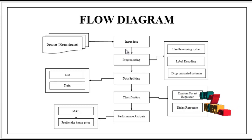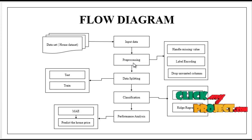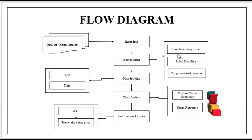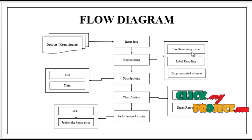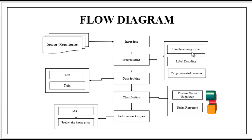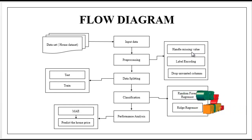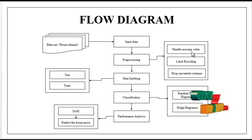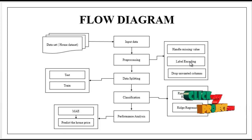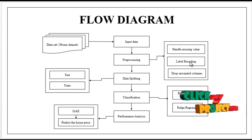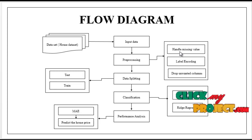Then we have to implement the preprocessing step. In this step we have to handle missing values. Handling missing values means we have to check if any missing values are present in the dataset. If there are any missing values, we have to replace them with zeros or some median or mean value. Otherwise we have to ignore them. After that, label encoding means we have to encode the data into labels, that is, convert the string into numeric integer values for machine readability. The purpose of handling missing values is to avoid wrong predictions.